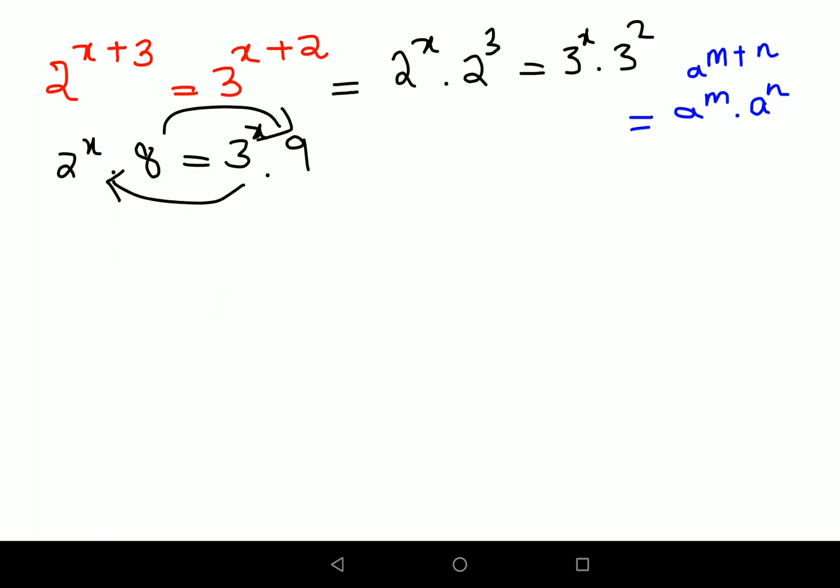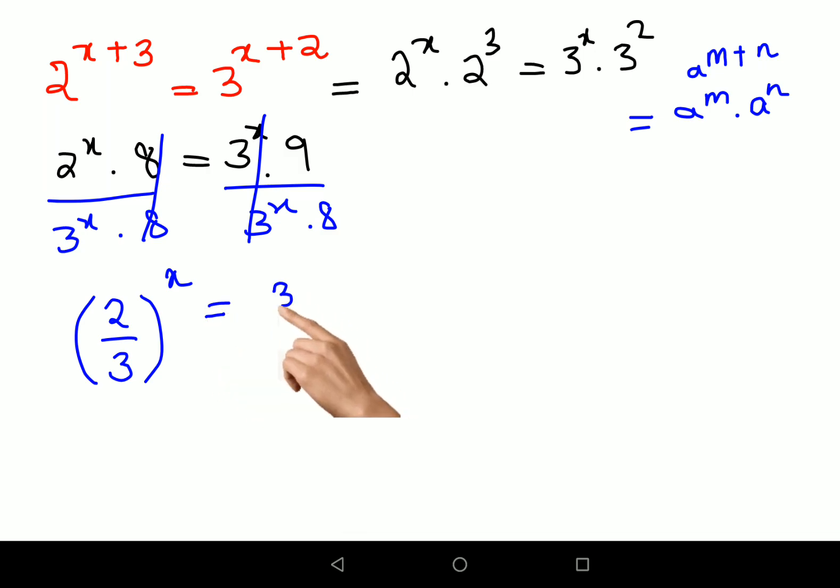So you can shift the bases and the variables on one side and the numbers on another side. What will happen is we will divide both sides by 3 raised to x and also by 8. So this 8 is getting cancelled, this 3 raised to x is getting cancelled, so you're getting 2 upon 3 raised to x.